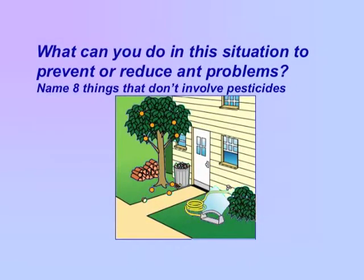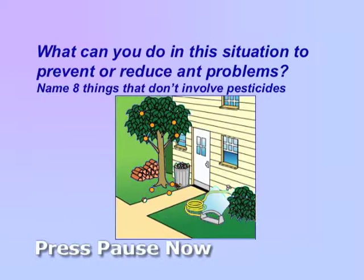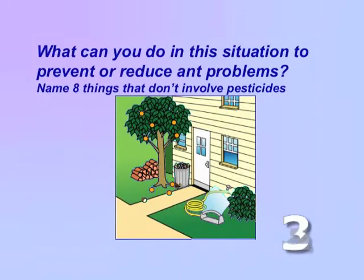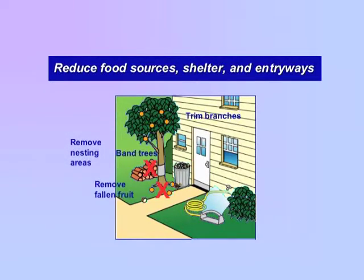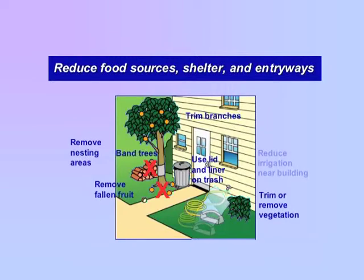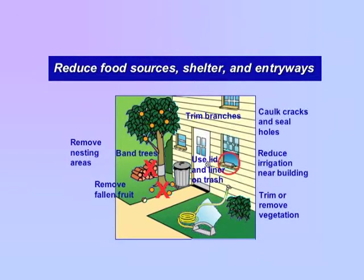What can you do in this situation to prevent or reduce ant problems? Name eight things that don't involve pesticides. Prevent or reduce ant problems by reducing food sources, shelter, and entryways. Trim branches and band trees. Remove nesting areas and fallen fruit. Use lids and liners for trash cans. Trim back or remove vegetation growing next to buildings. Reduce irrigation near the building foundation. Finally, caulk cracks and seal holes to prevent ant entry to buildings.